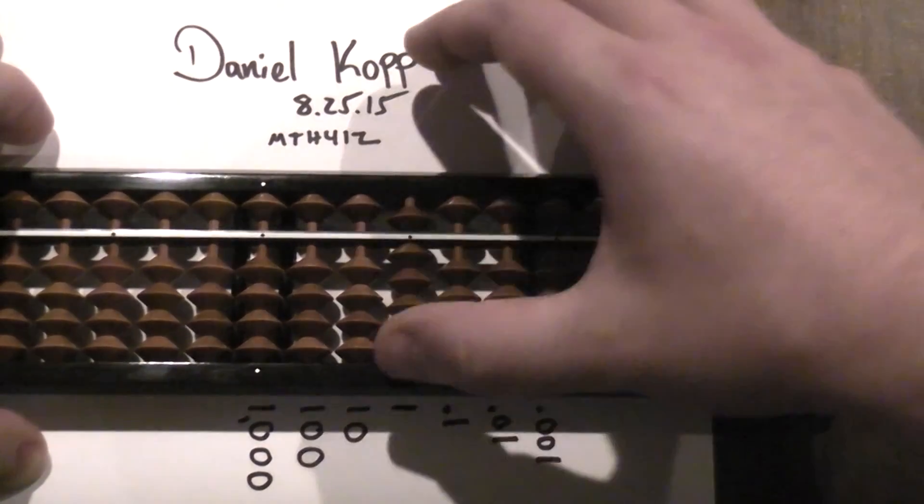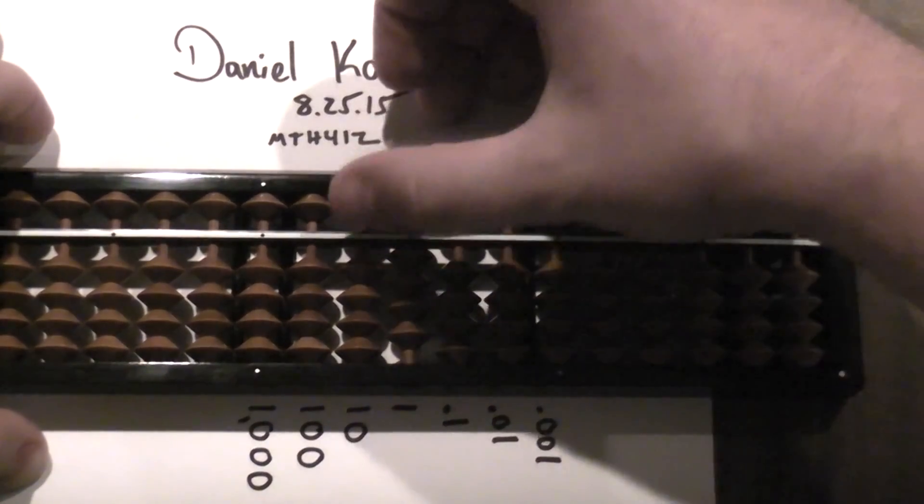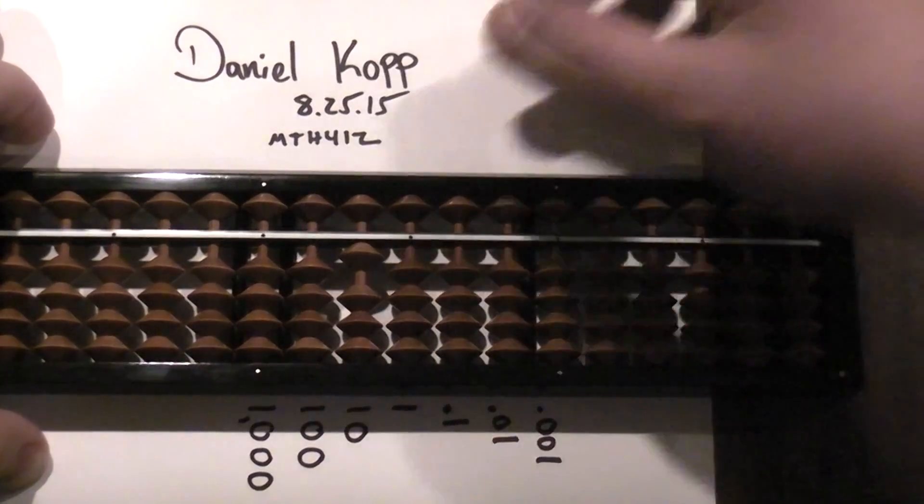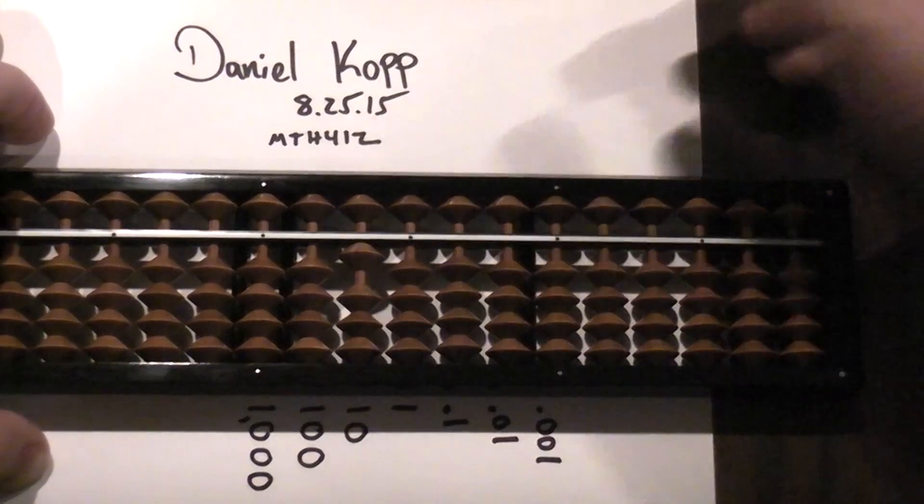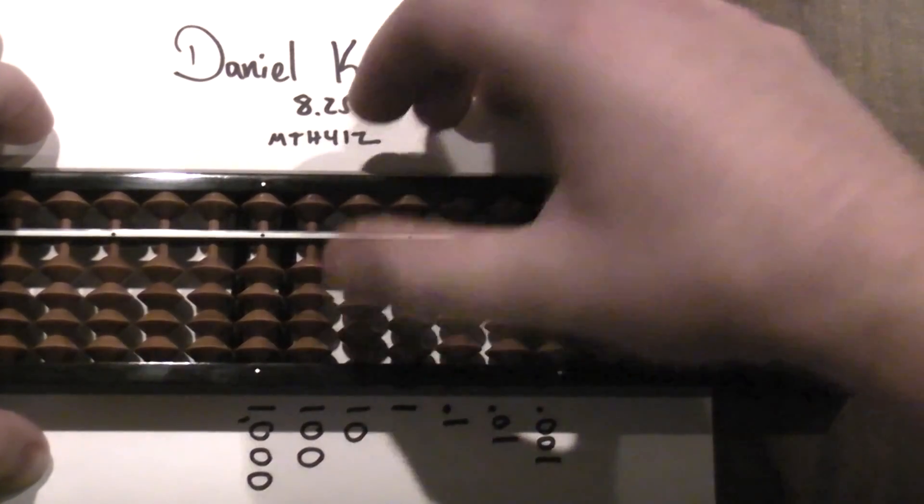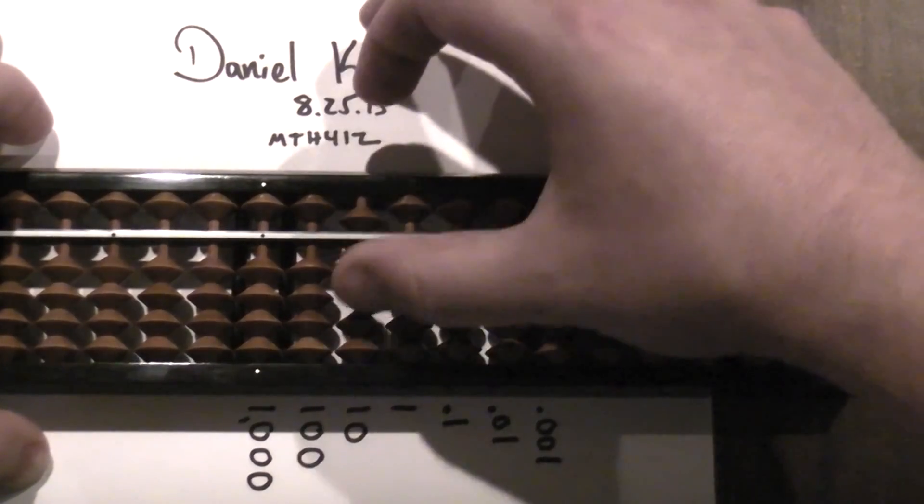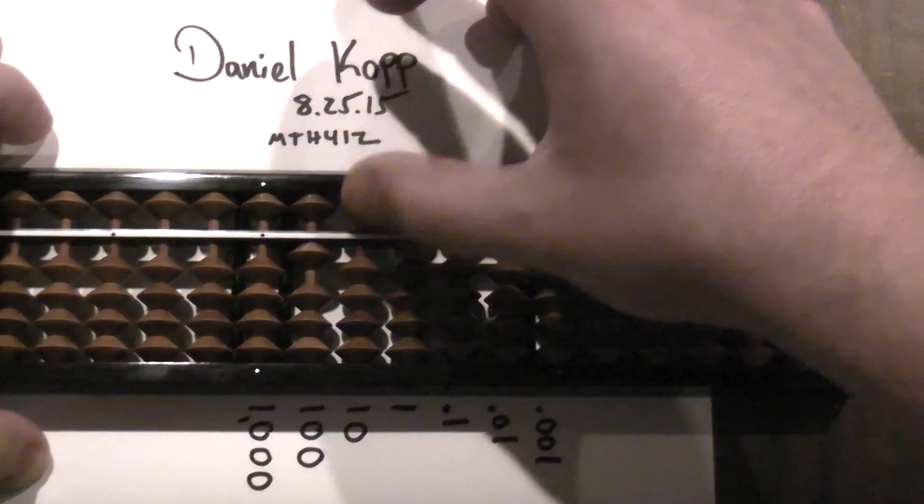That's ten. We added one here and we subtracted nine. Twenty, thirty, forty, fifty, sixty, seventy, eighty, ninety, one hundred.